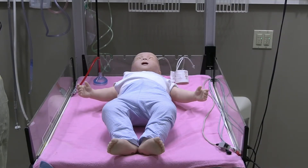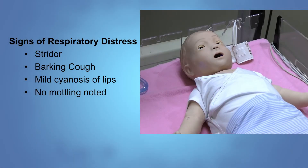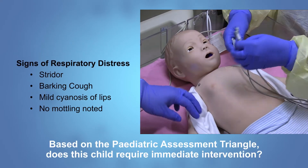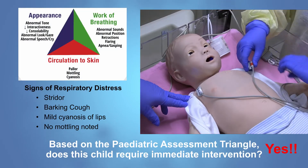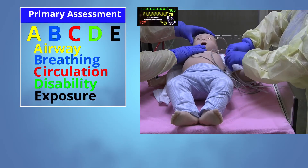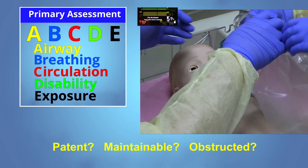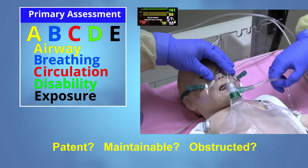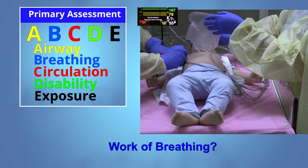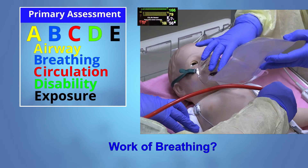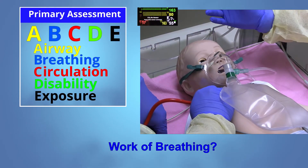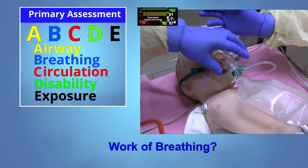This is a 10-month-old child brought in by mother to your emergency department. Baby is currently stridorous with a barking cough and obvious signs of respiratory distress, showing mild cyanosis of the lips and no mottling of the exposed skin. Does this child require immediate intervention? Yes, they do. Move on quickly to your primary assessment, assessing their airway. This patient's airway is patent and maintainable, with no obvious signs of oral obstruction. Moving on to B for breathing, the patient has increased work of breathing with decreased breath sounds, a high-pitched inspiratory stridor, nasal flaring, grunting, moderate in-drawing, and a barky cough.